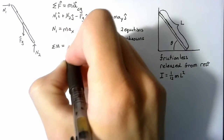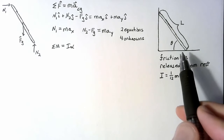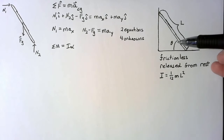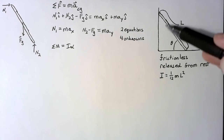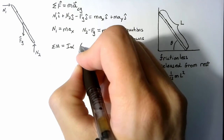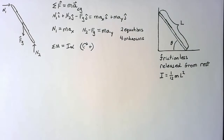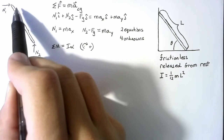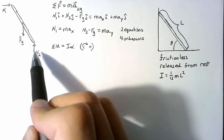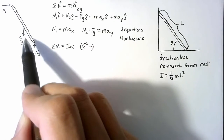The sum of the moments is equal to I alpha. The sign convention depends on how we've drawn our picture: an increasing theta causes our rod to rotate in a clockwise direction, so we're going to call clockwise rotation positive. This N1 force is going to create a positive (clockwise) moment. This N2 force is going to cause a negative moment. And the force of gravity acts straight through the center of gravity, so it doesn't create a moment at all.